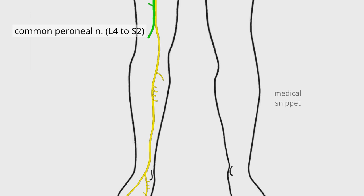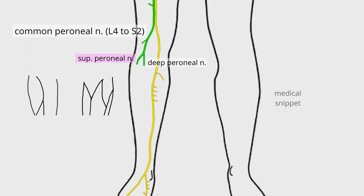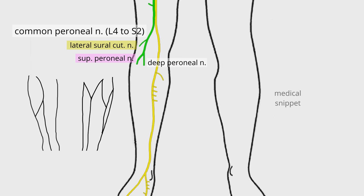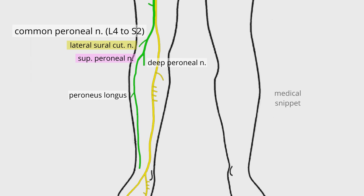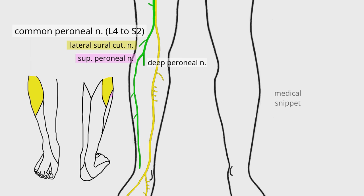The common peroneal nerve travels down and divides into superficial peroneal and deep peroneal nerves. The common peroneal nerve gives off the lateral sural cutaneous nerve, which supplies the skin of the upper two-thirds of the lateral side of the leg. The superficial peroneal nerve enters the lateral compartment of the leg and supplies muscular branches to peroneus longus and peroneus brevis. It also supplies the lower third of the lateral side of the leg.